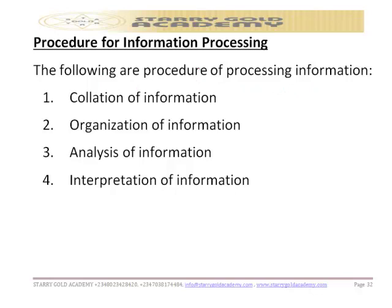The following are the procedures by which information can be processed. One is collation of information. Two is organization of information. Three is analysis of information. Four is interpretation of information. Let's take them one after the other.